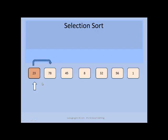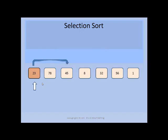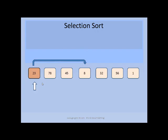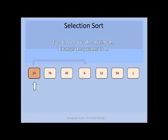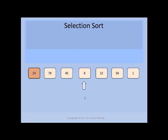We compare 23 and 78 — 23 is less than 78, so 23 is still the smallest. Next we compare 23 and 45 — 23 is still the minimum. Next, 23 is compared with 8, and we see that 8 is now the minimum element. So we will change the minimum pointer to point to 8. This is how we get 8 as the current minimum.